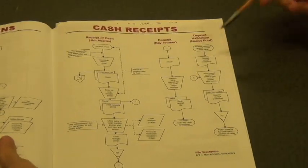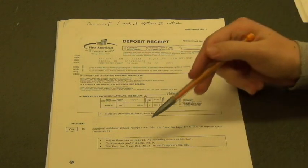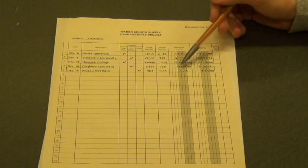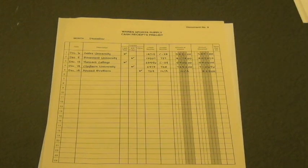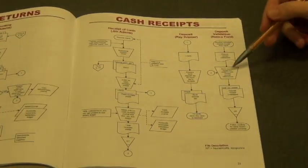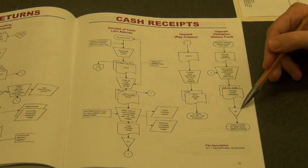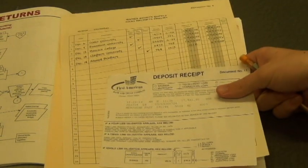On the flowchart, it says to take that deposit receipt and agree it to the cash pre-list. The cash pre-list is document number 9, so take that out. On December 14th, the two amounts add up to $7,931.96, so they are reconciled. You have agreed the deposit receipt and pre-list in the cash receipts journal. Now take these two documents and file them in the temporary folder numerically.